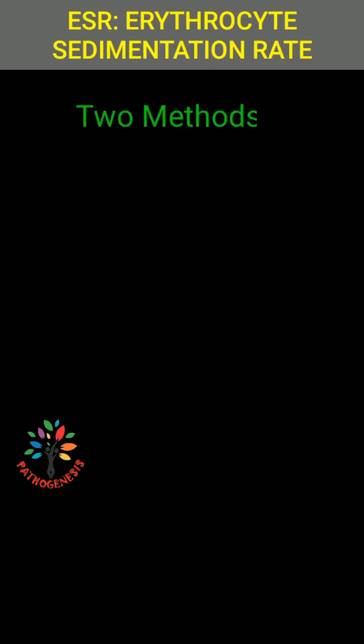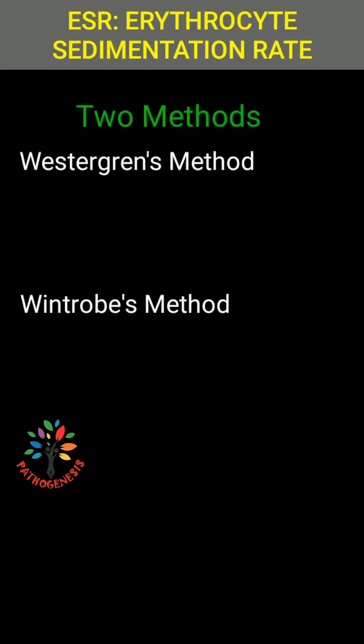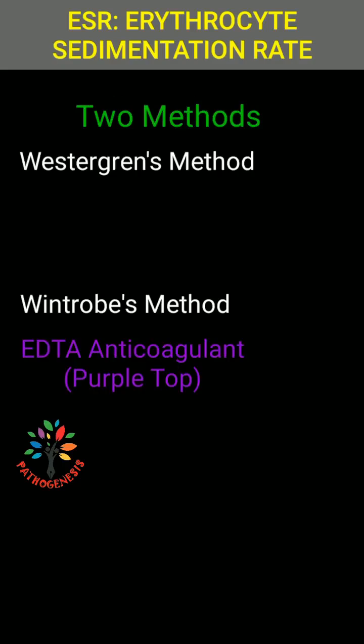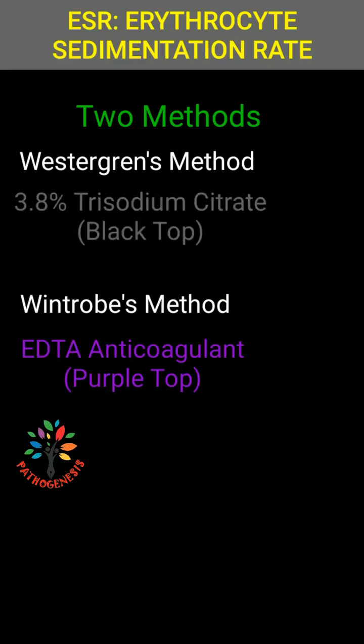There are two methods to determine ESR: Wintrobe's method and the Westergren method. For Wintrobe's method, we need EDTA anticoagulated blood, and for the Westergren method, we need 3.8% trisodium citrate.